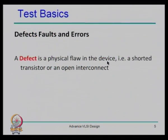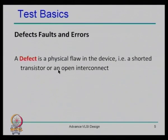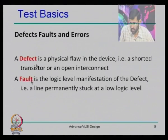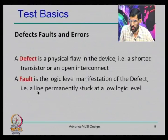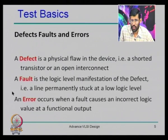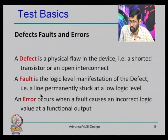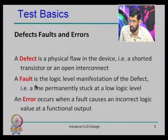We define a few important terms. A defect is a physical flaw in the device — for example, a shorted transistor or an open interconnect. This defect has a logic-level manifestation defined as a fault: a line may be permanently stuck to logic level 0 or logic level 1. The fault then causes an incorrect logical output value of the function. So: defect manifests as a fault, and fault manifests as an incorrect output.